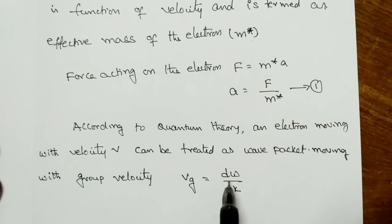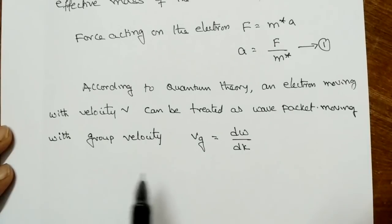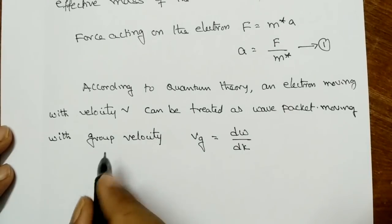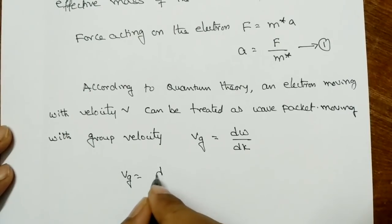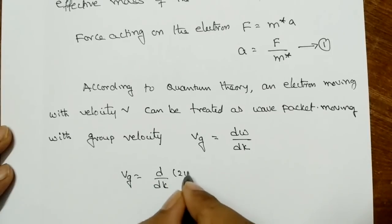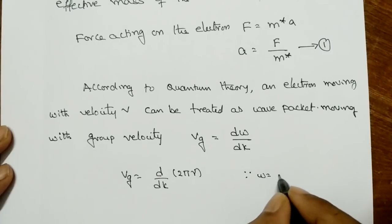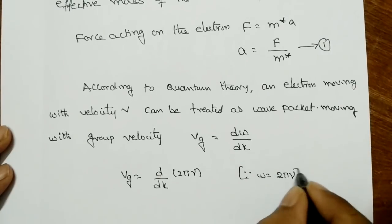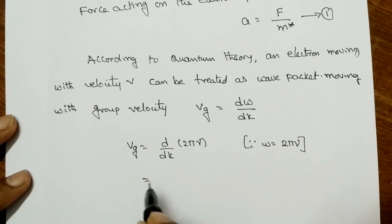The group velocity Vg is equal to dω/dk, where ω is the angular velocity and k is the wave vector. For the solution, Vg = d/dk of 2πν, since ω = 2πν. Here we are replacing all the classical terms with quantum terms.